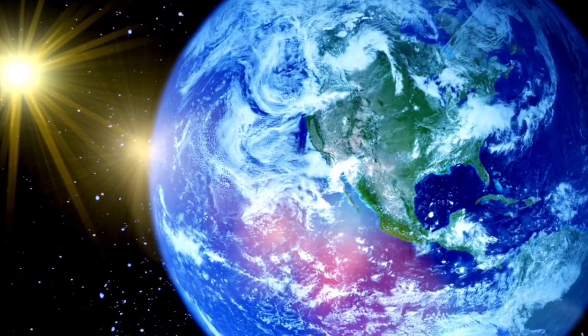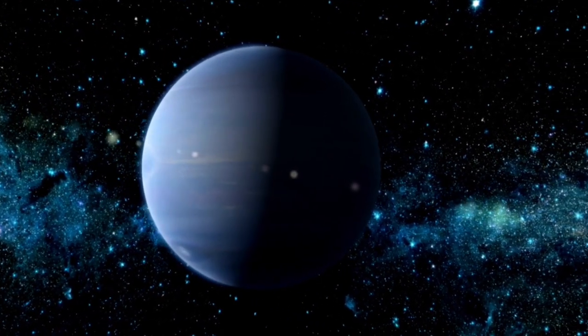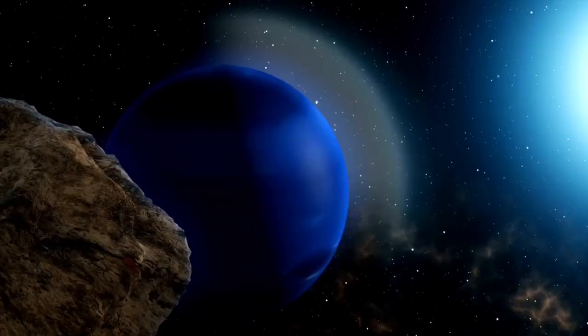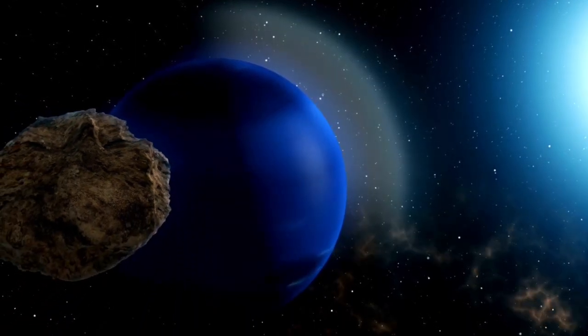Yet the category of exoplanets includes more than just giants. Neptune-like planets, termed Neptunians, exist in both small and hot forms. These are compact, cloud-shrouded worlds, often nestled close to their host stars, presenting unique challenges to scientists.